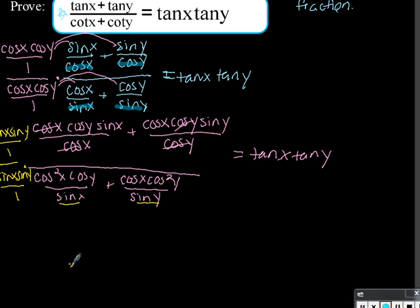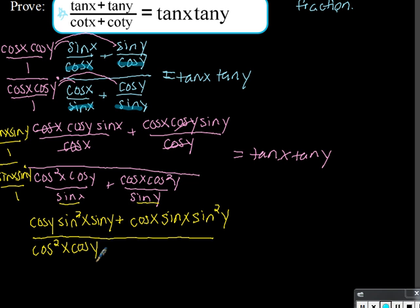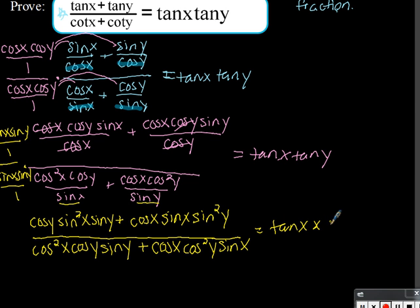We're going to skip writing every step and just multiply straight through. In the top, we get cosine of y times sine squared of x times sine of y, plus cosine of x times sine of x times sine squared of y. In the bottom, we get cosine squared y times sine of y, plus cosine of x times cosine squared y times sine of x. That is all still equal to tangent of x times tangent of y.